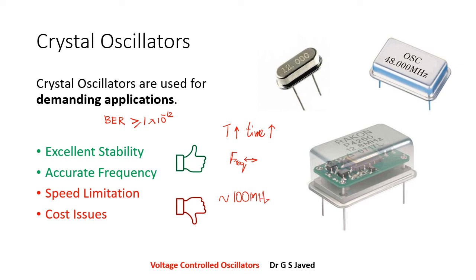Crystal oscillators are available up to around 100 MHz, and practically 125 MHz crystals have been utilized in design — but these come at a very high price. The cost is significant because to maintain that kind of oscillation, accuracy, and stability, you need to pay a premium. So the cost and price are both very high.